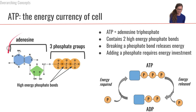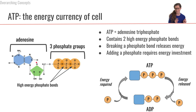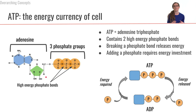This is the adenosine portion. Adenosine is made of a nitrogen base — this is adenine — plus a ribose sugar, a 5-carbon sugar that's very similar to the nucleotides that make up our DNA. And then attached to that are three phosphate groups, which make up the triphosphate of ATP.